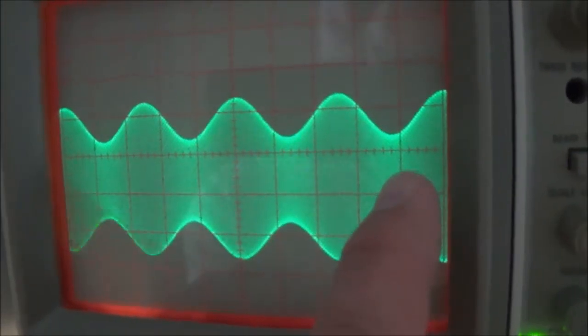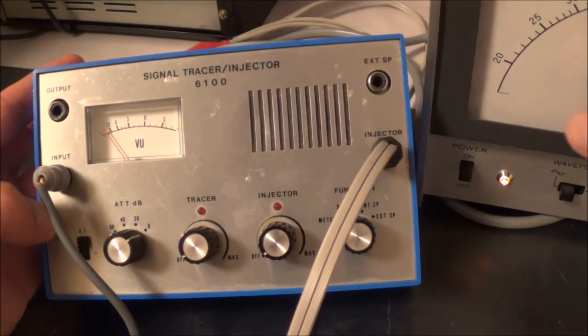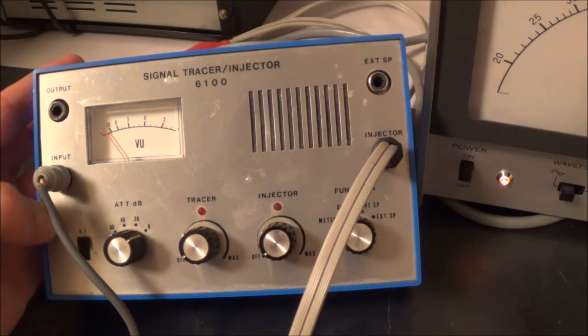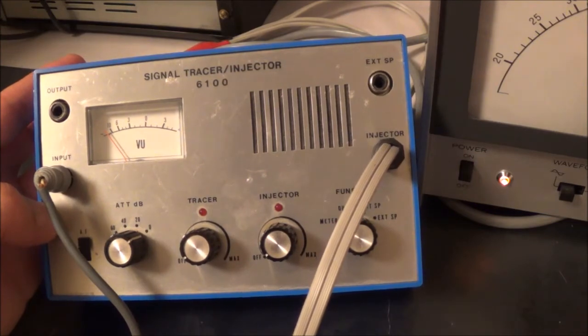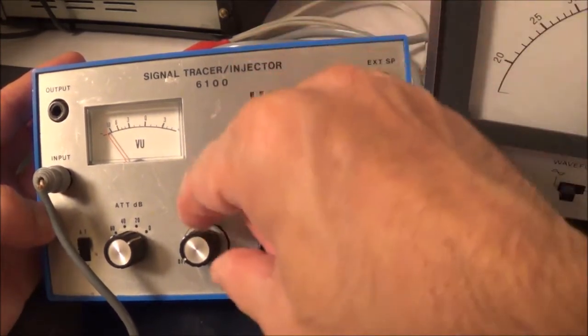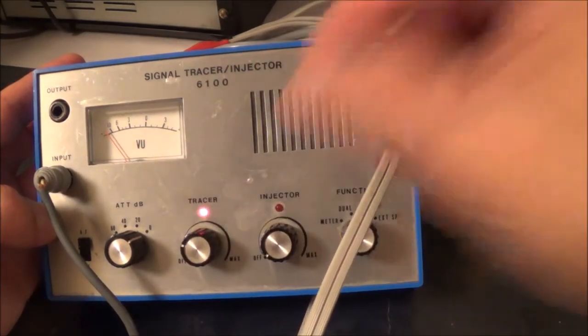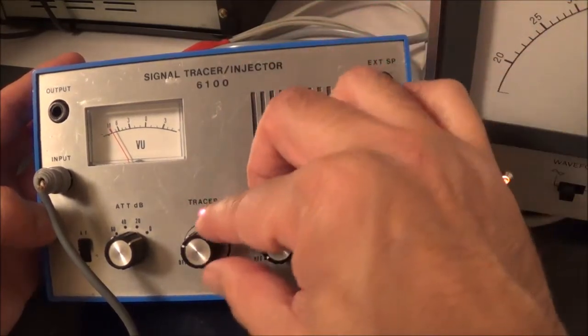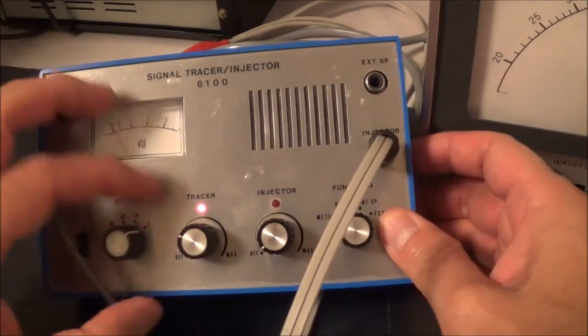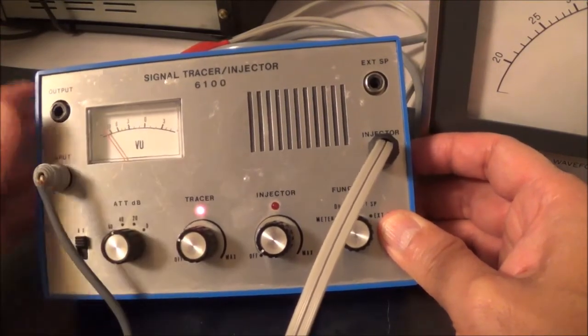I've got my leader audio generator hooked up. I'm going to be feeding in a 400 hertz unmodulated signal. This is just a regular audio frequency, 400 hertz. Let's turn this thing on. Okay, that was that. You can see I can use the attenuator to turn things down.